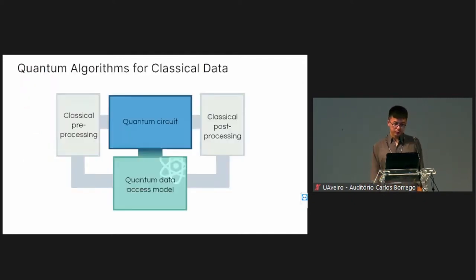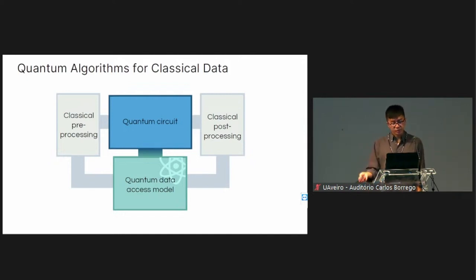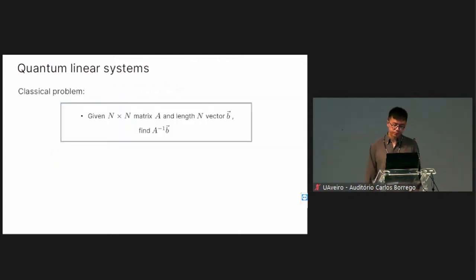A typical modern quantum algorithm for classical data might look like this: at the core we have a quantum circuit, with some classical pre- or post-processing. There will often be an additional element — a quantum data access model. Since we're operating on classical data, we often ask for coherent access to this data, provided by this quantum data access model.